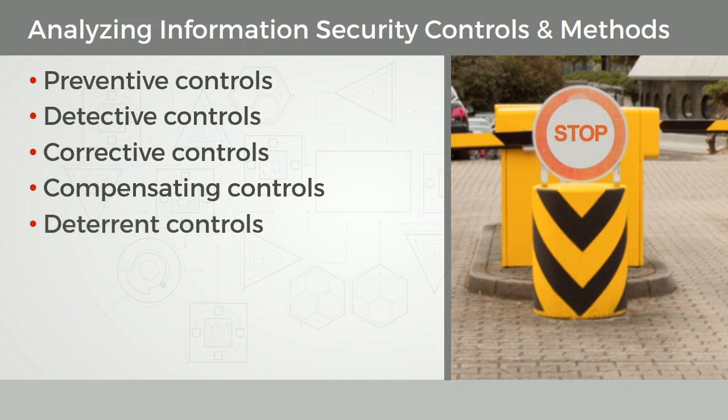A deterrent control is a warning. It could be a sticker on a window, a sign on the fence, or a sign in the yard or in the building. You want to deter a potential compromise. It could even be a warning banner that comes up when someone tries to access a system through a graphical interface or command line interface. Maybe offering rewards for information on inside hacking. With deterrent controls, we're directly addressing threats.